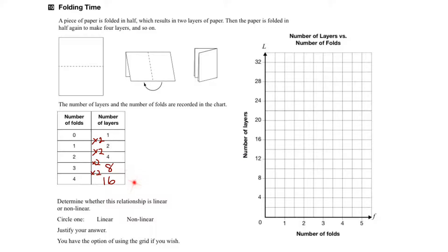Looking at the table of values: after no folds, the number of layers is one, so I can plot that point. After one fold it's two, so over to one fold and up to two — I can plot that point. And after two folds it's four layers thick, so I plot that point at two folds, four layers.